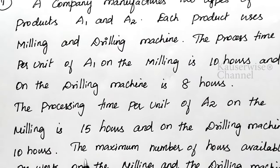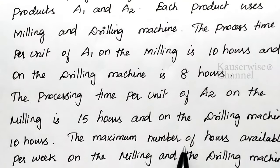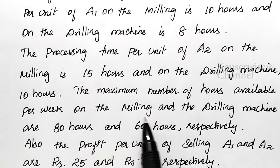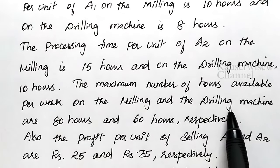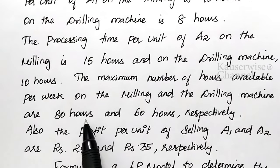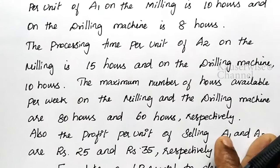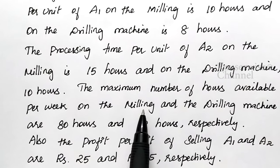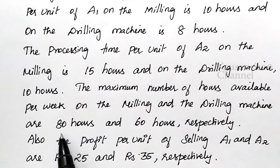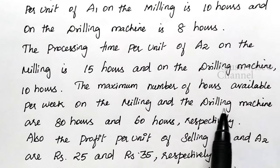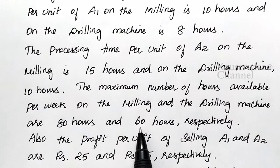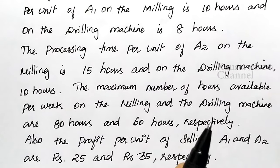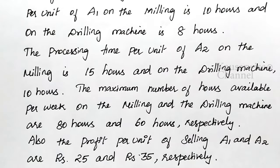Now see the problem: the maximum number of hours available per week on the milling and drilling machines are 80 hours and 60 hours. The limitation is given — milling machine you can use for 80 hours per week, and drilling machine you can use for 60 hours per week.